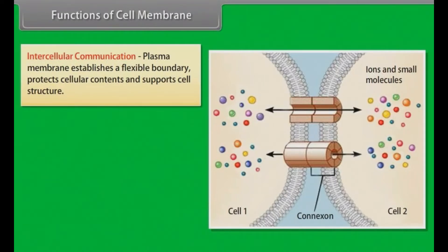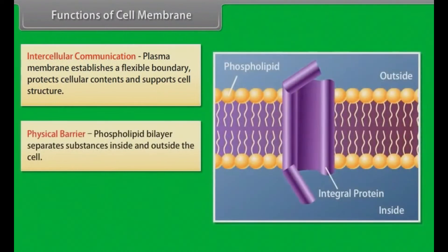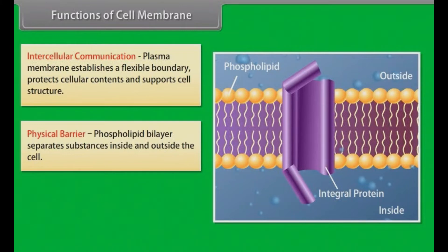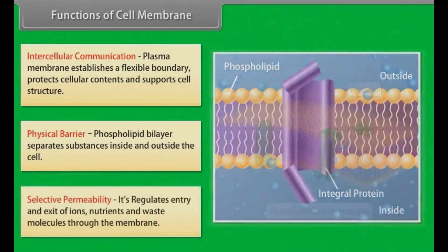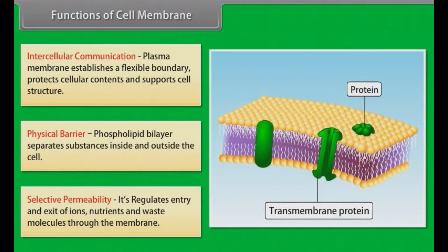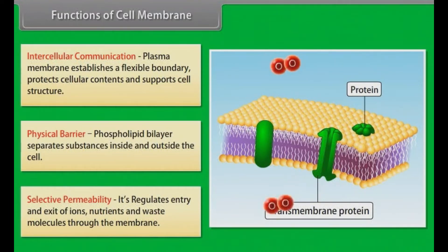Exocytosis: it is the reverse of endocytosis, providing for throwing out of waste products and secretory materials. Intercellular communication: plasma membrane establishes a flexible boundary, protects cellular contents, and supports cell structure. Physical barrier: the phospholipid bilayer separates substances inside and outside the cell. Selective permeability: it regulates entry and exit of ions, nutrients, and waste molecules through the membrane.